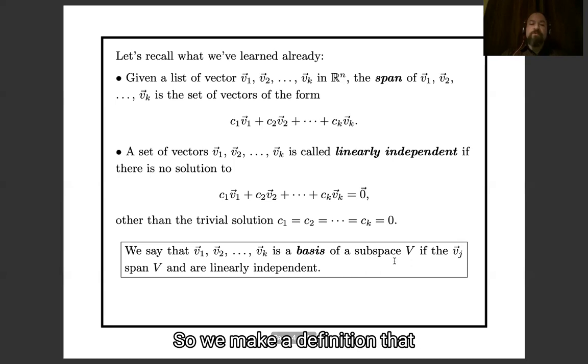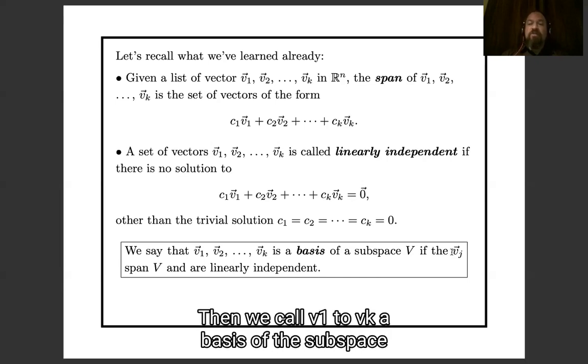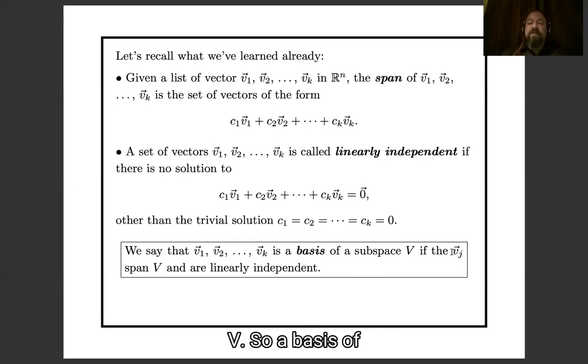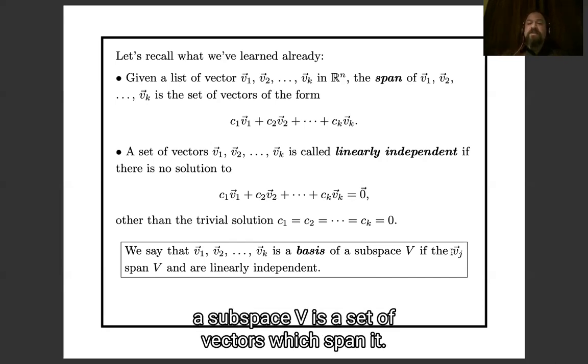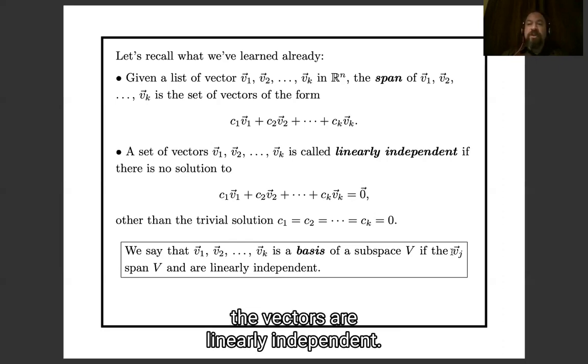So we make a definition that if v1 to vk span V and v1 to vk are linearly independent, then we call v1 to vk a basis of the subspace V. So a basis of a subspace V is a set of vectors which span it, meaning everything in the subspace is a linear combination of them, and is uniquely so. It is a linear combination only one way because the vectors are linearly independent.